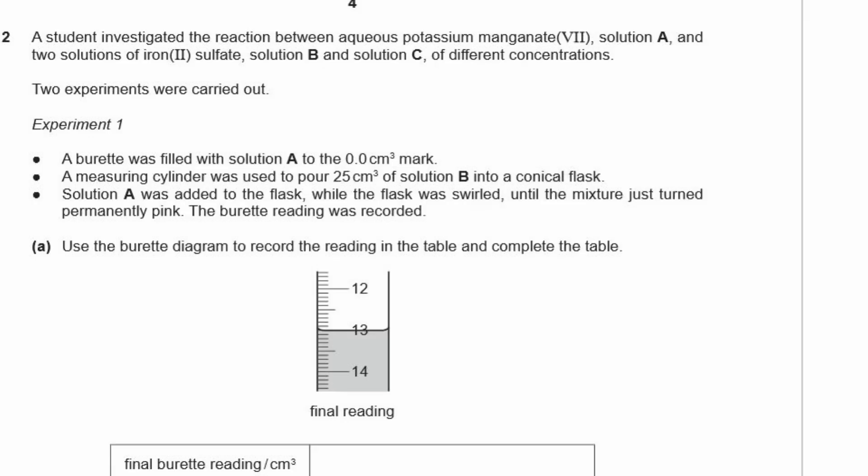Question two. A student investigated the reaction between aqueous potassium manganate 7, solution A, and two solutions of iron 2 sulfate. Solution B and solution C of different concentrations. So we reacted potassium manganate 7 with iron 2 sulfate of different concentrations. Alright. Two experiments were carried out. Experiment one. A burette was filled with solution A, which is a potassium manganate, to the 0.0 centimeters cubed mark. A measuring cylinder was used to pour 25 centimeters cubed of solution B into a conical flask. Solution A was added to the flask while the flask was swirled until the mixture just turned permanently pink. The burette reading was recorded.